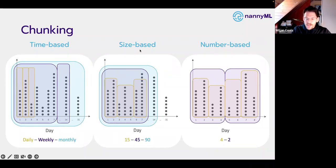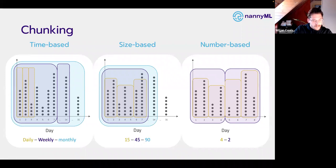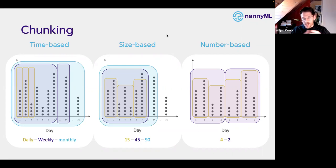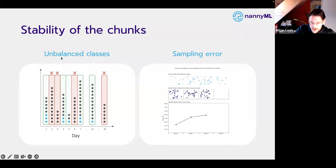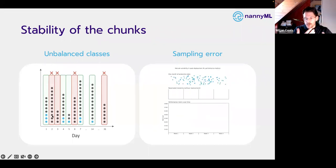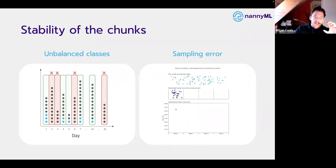Chunking has implications regarding the stability of metrics and aggregations. For instance, if the chunk size is rather small and we have very unbalanced classes, it might be that in some chunks we don't get the minority class. If we don't have the minority class present, we can't measure combinatory metrics like ROC AUC. So that is very important to think about when picking the right chunking approach.